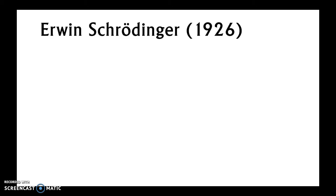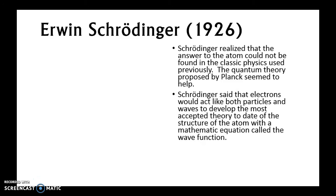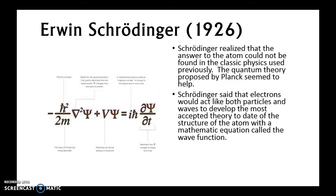Then comes along Erwin Schrödinger. He realized that the answer about the atom couldn't be found in classical physics. Instead, he proposed a quantum theory, building on what Planck had begun. Schrödinger said electrons could act both like particles and waves, and used that to develop a mathematical equation called a wave function. In the equation, H is Planck's constant, psi (ψ) is the wave function representing the wave-particle nature of the atom, and M relates to a mass or distance relationship.